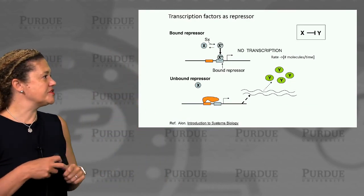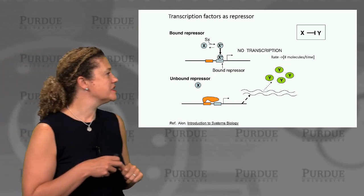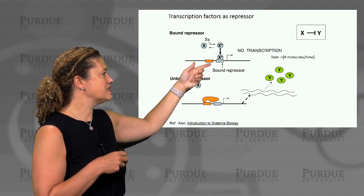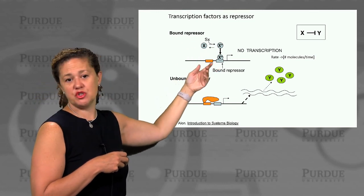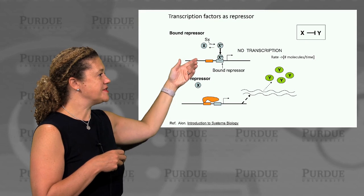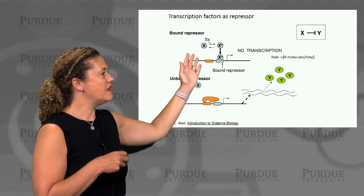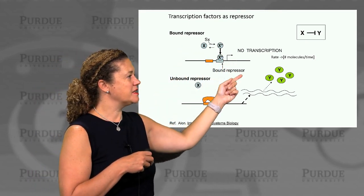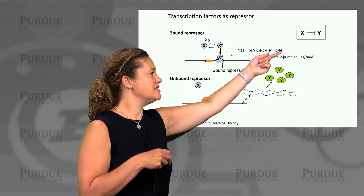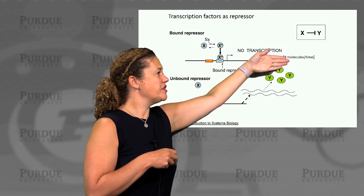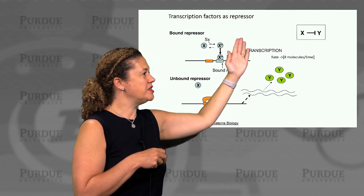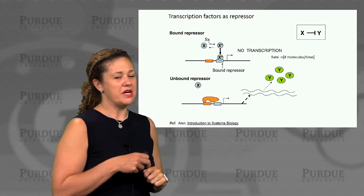Transcription factors can also act as repressors. In this case, when our transcription factor binds, we actually block or reduce the rate of transcription. When our transcription factor is present, we block the production and expression of gene Y. In our network view, we represent this as X with a flat-ended line representing inhibition, blocking expression of Y.